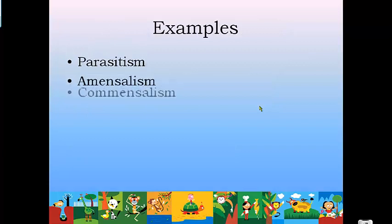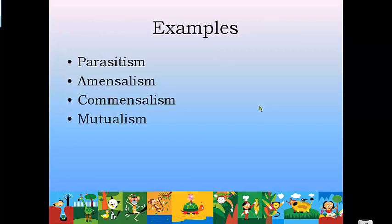So here are the things we talked about today — make sure you have notes on all of them. You will be tested on them; these are on the AIMS test. The AIMS will give you examples of different organisms and ask you which relationship is in place: parasitism, amensalism, commensalism, mutualism, or competition. Make sure you know these well for our test as well as for the AIMS test.